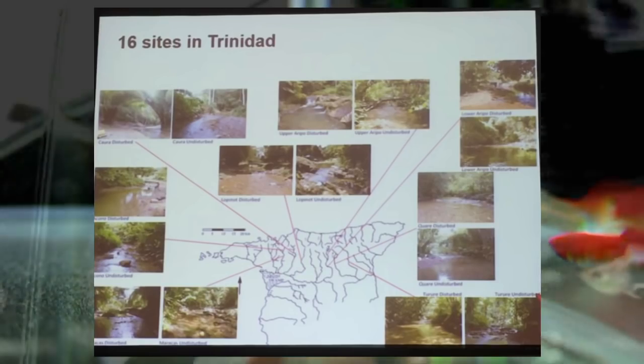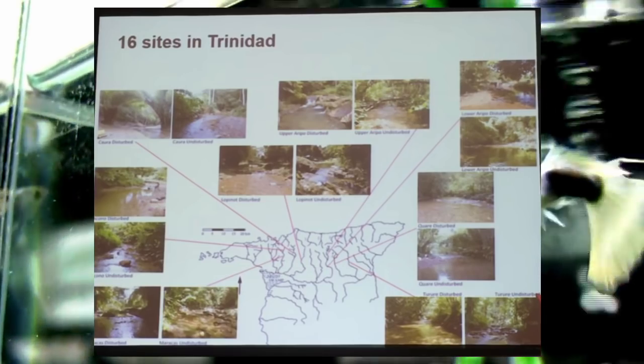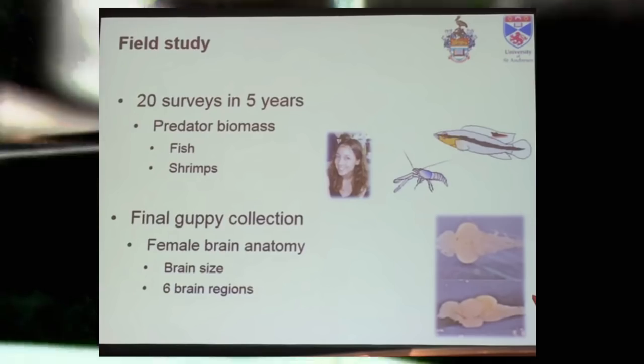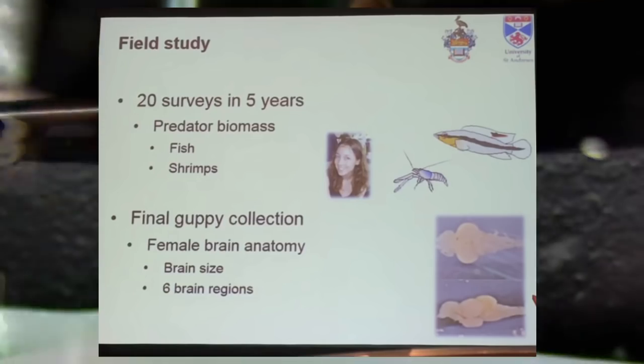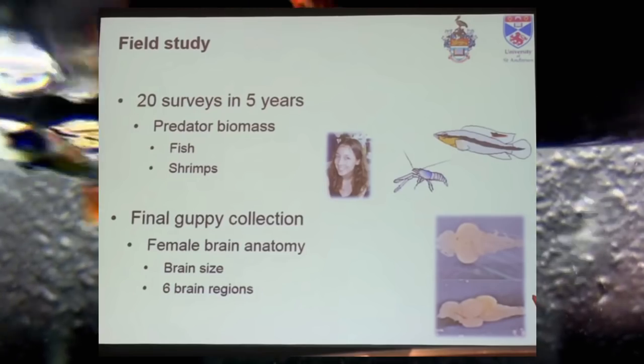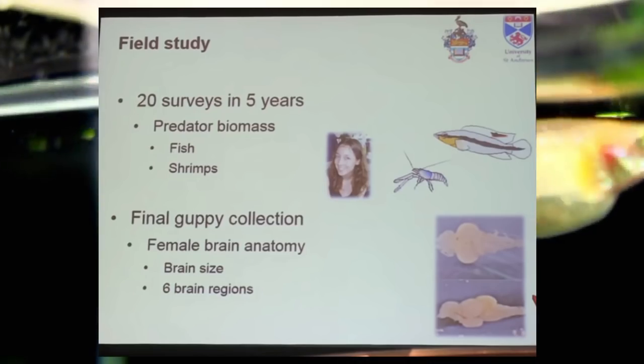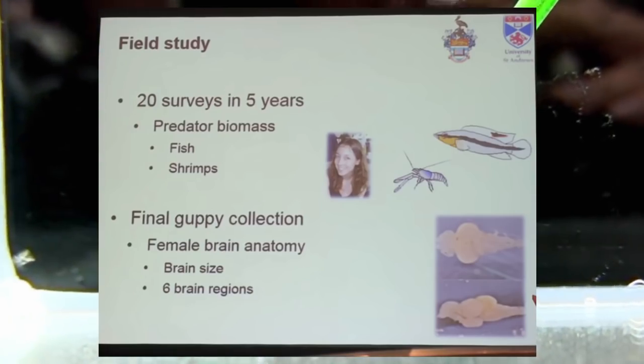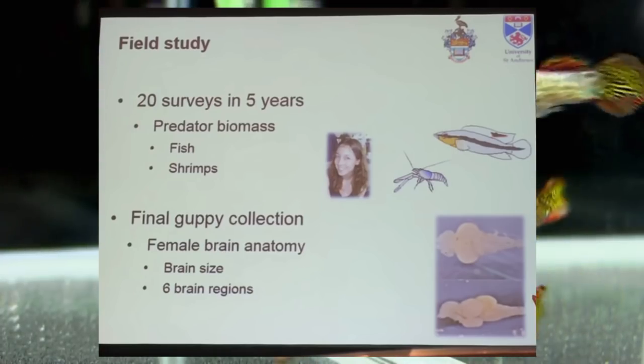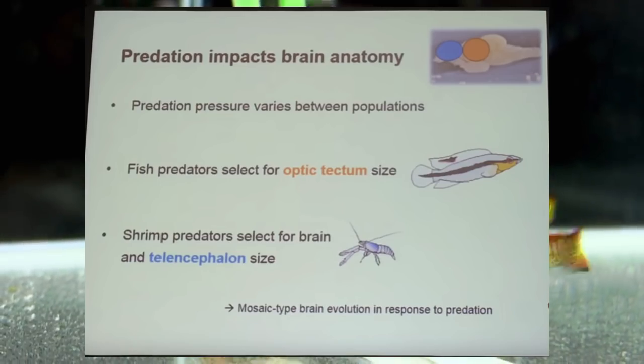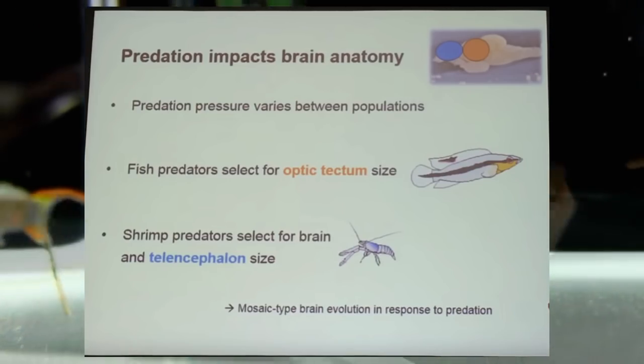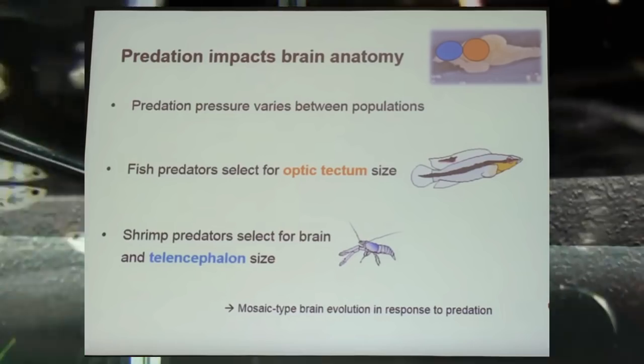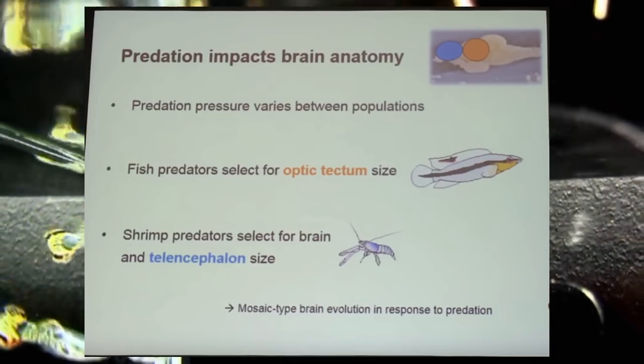And what this survey did was to measure the predator biomass of guppies. That was to measure the number of fish and the number of shrimps in each area. And then, the female brain anatomy of guppies in all of those areas was also measured. And the results should really surprise no one. The females in these different areas had different brains. Their brains were evolving in response to the predators which were most represented in those areas.